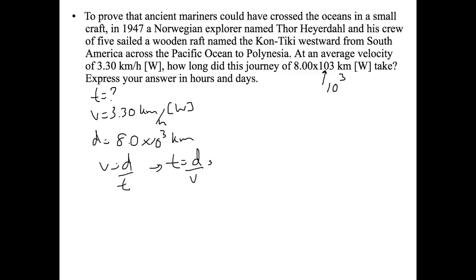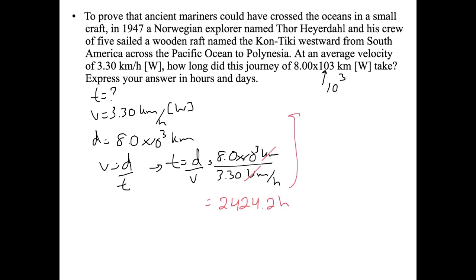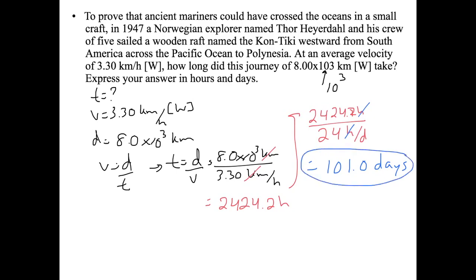Using v equals d over t, rearranged to t equals d over v: 8.0 times 10 to the 3 divided by 3.3 kilometers per hour. Kilometers cancel and we get 2424.2 hours. Dividing by 24 hours per day gives 101.0 days. In proper significant figures (three sig figs each), the answers are 2.42 times 10 to the 3 hours and 101 days.